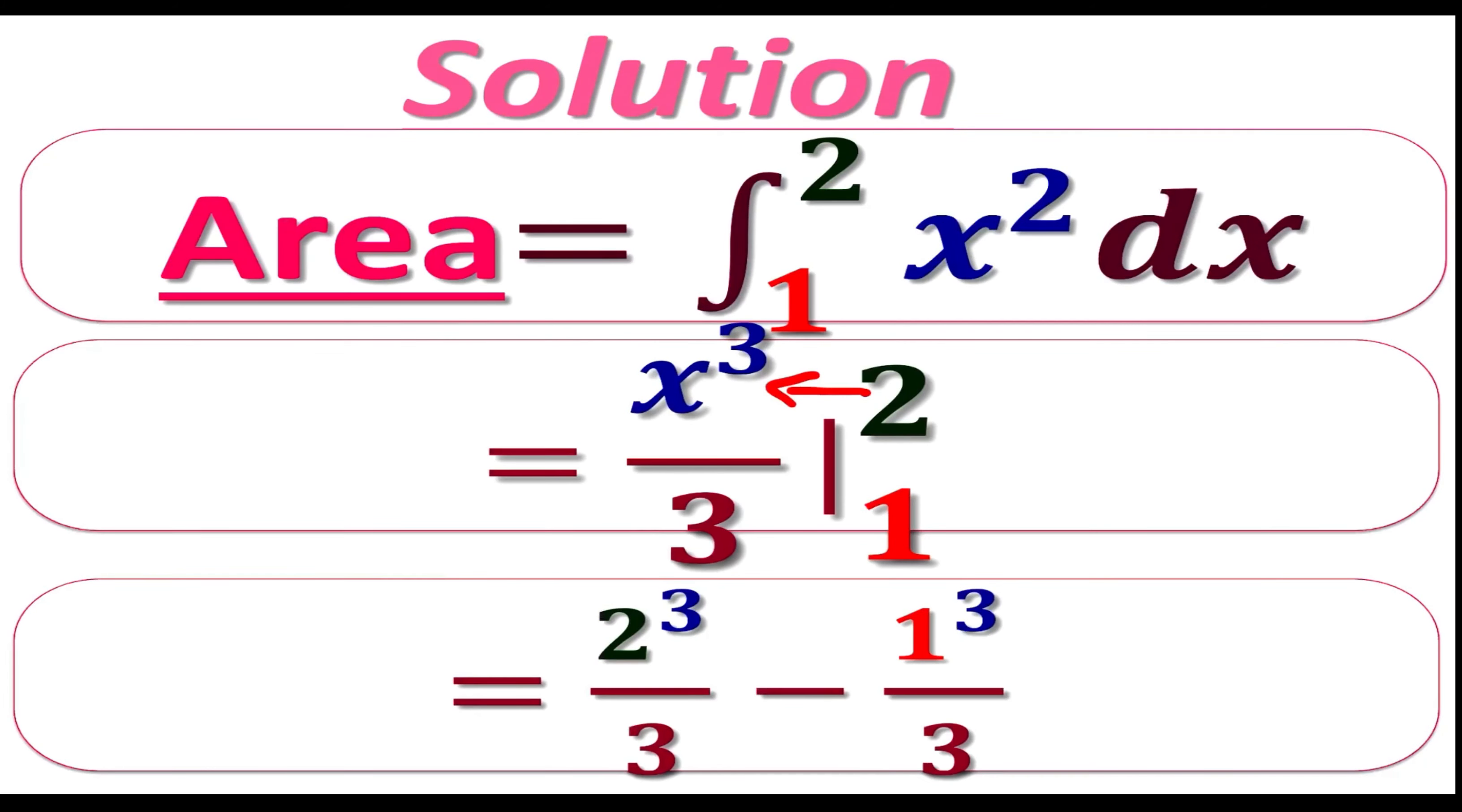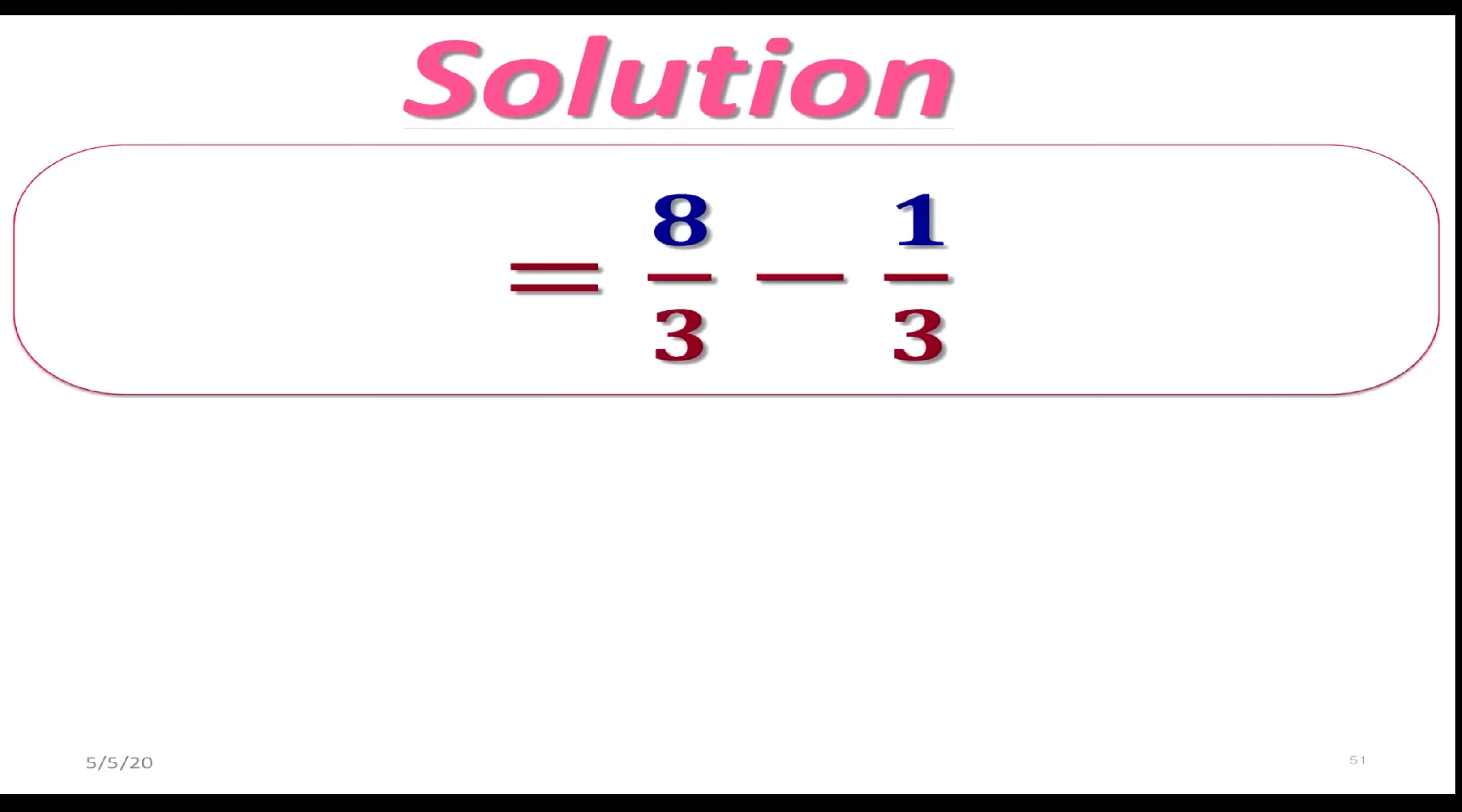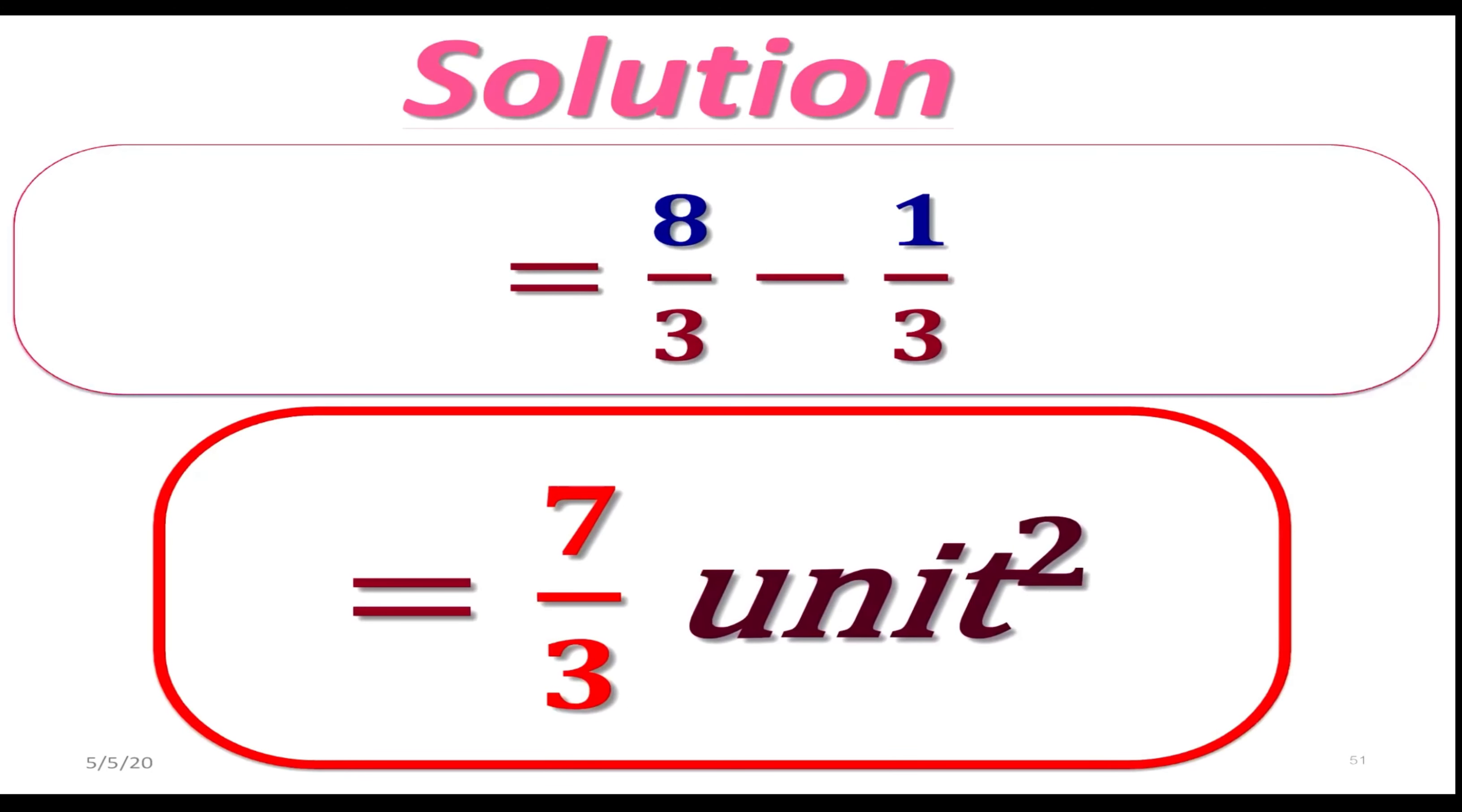Let's plug in 2 instead of x first. It's going to be 2 cubed over 3, subtract or minus. We are going to do the same with 1, so it's going to be 1 cubed over 3. All we need to do is just evaluate this. It's going to be 8 over 3 minus 1 third, which is 7 over 3 unit squared, since we are looking for area. That's going to be the answer.